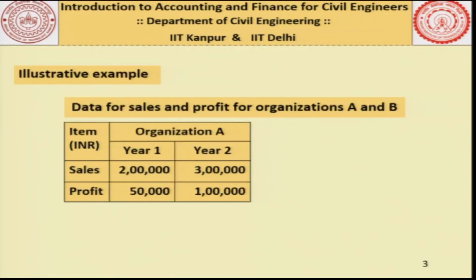Before we get started with ratio analysis, let us look at this illustrative example. This table gives the data for sales and profits for organizations A and B. If we look at organization A, we have the numbers for year 1 and year 2. The sales went from 2 lakhs to 3 lakhs and the profits increased from 50,000 to 1 lakh. One way of looking at it is in terms of these absolute numbers.